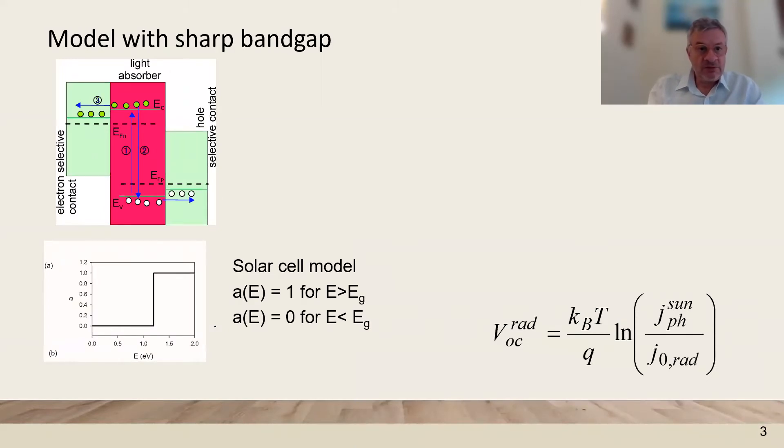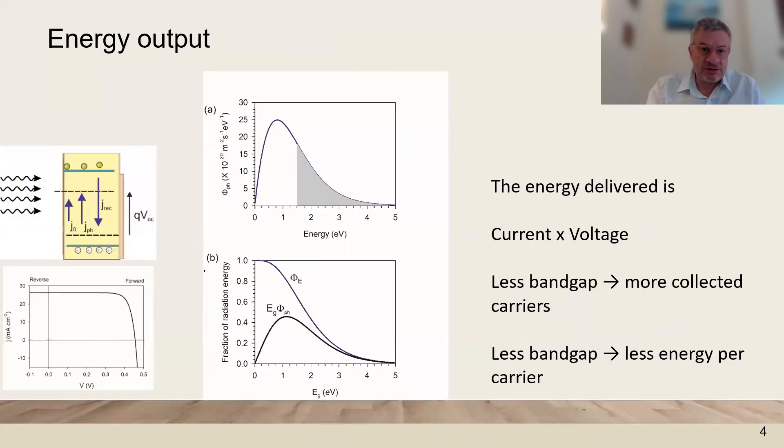So we start with a model that has no limitation for transport, flat bands and Fermi level, good extraction, and a sharp band gap that absorbs nothing below the energy of the gap and above it absorbs all the photons. We use this model to evaluate the efficiency of a given solar cell based on this fundamental semiconductor structure.